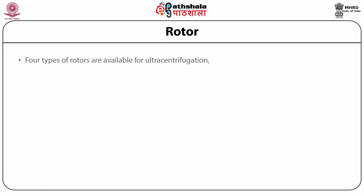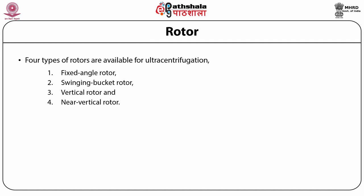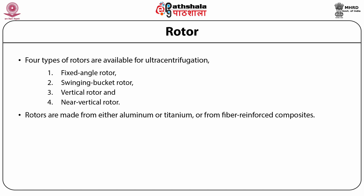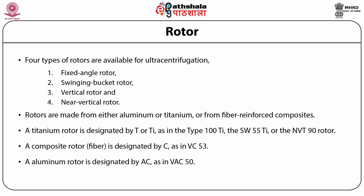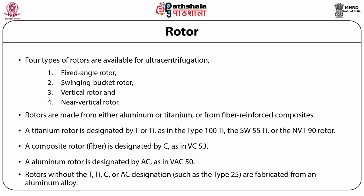There are four types of rotors: fixed angle rotor, swinging bucket rotor, vertical rotor and near-vertical rotor. Rotors are made of either aluminum, titanium, or fiber-reinforced composites. A titanium rotor is designated by 'Ti' — for example Type 100 Ti or SW50 Ti. A composite rotor is designated by 'C' — for example VC53. An aluminum rotor is designated by 'AC' — for example VAC50. Rotors without titanium, carbon or aluminum designation, such as Type 25, are fabricated from aluminum alloy.